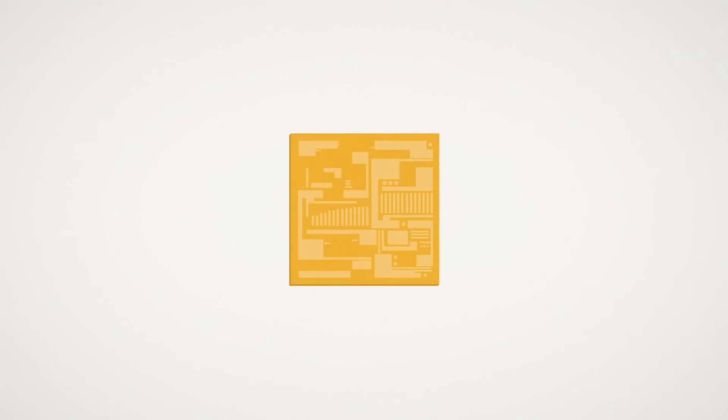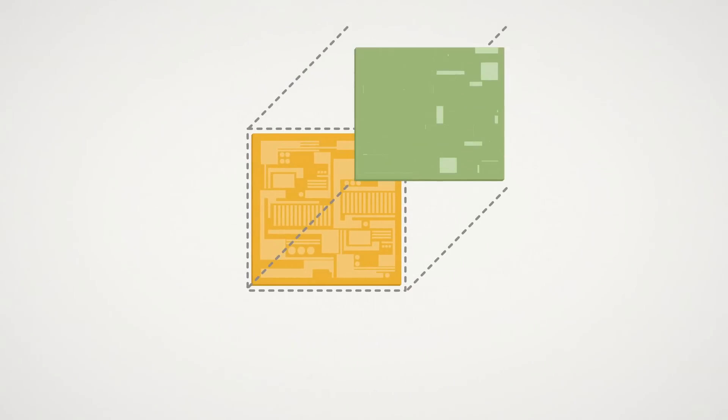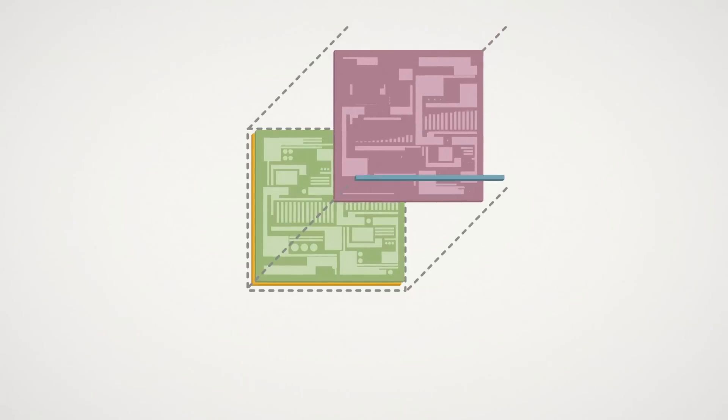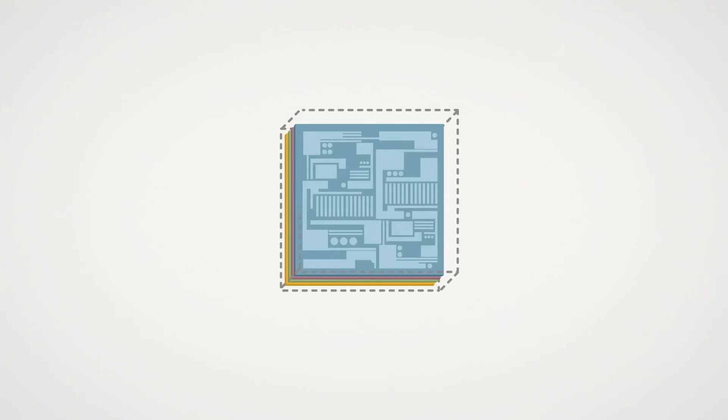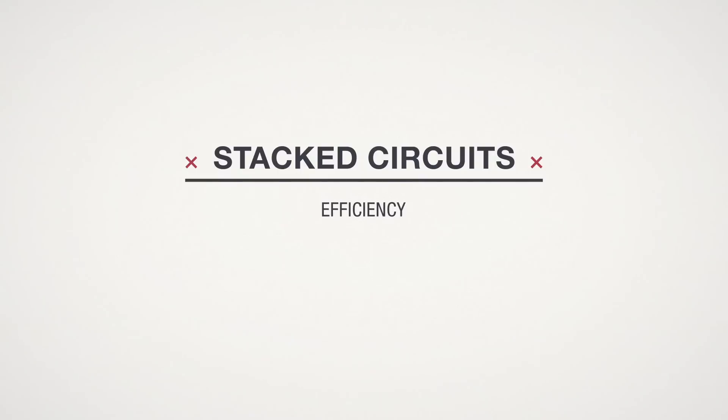One promising new approach takes integrated circuit manufacturing beyond two-dimensional scaling and into three-dimensional stacking. In this approach, several chips are stacked on top of each other to form a single high-performance package. These three-dimensional integrated circuits could provide much-needed improvements in efficiency, data transfer speeds, and physical size.